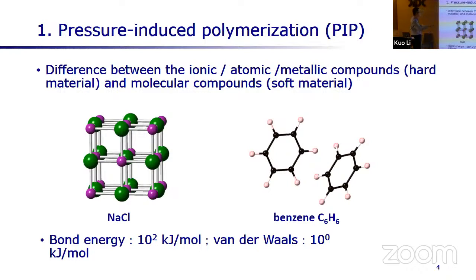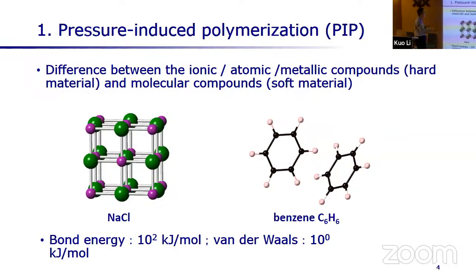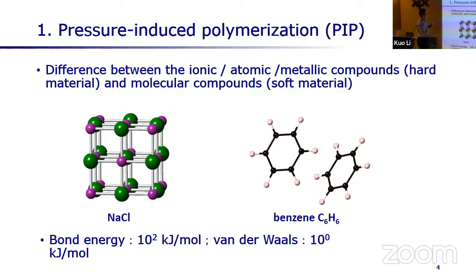That interaction is ionic bond, metallic bond, or sometimes covalent bond between the atoms. What's different is molecular compounds, which are also called soft materials, approximately. They are called soft materials because the interaction between the molecules is relatively weak. However, the interactions inside molecules — intramolecular interactions — are still very strong, with bond energy around several hundred kJ per mol.